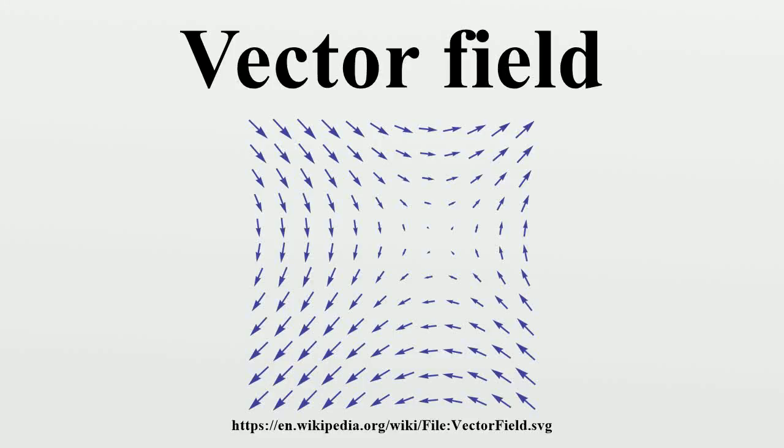In vector calculus, a vector field is an assignment of a vector to each point in a subset of space.